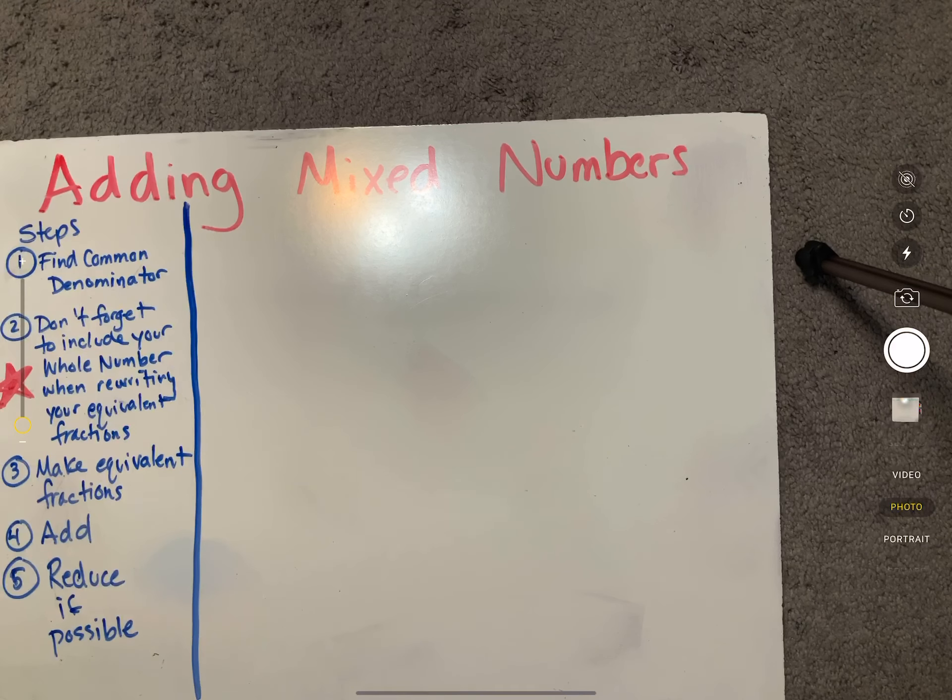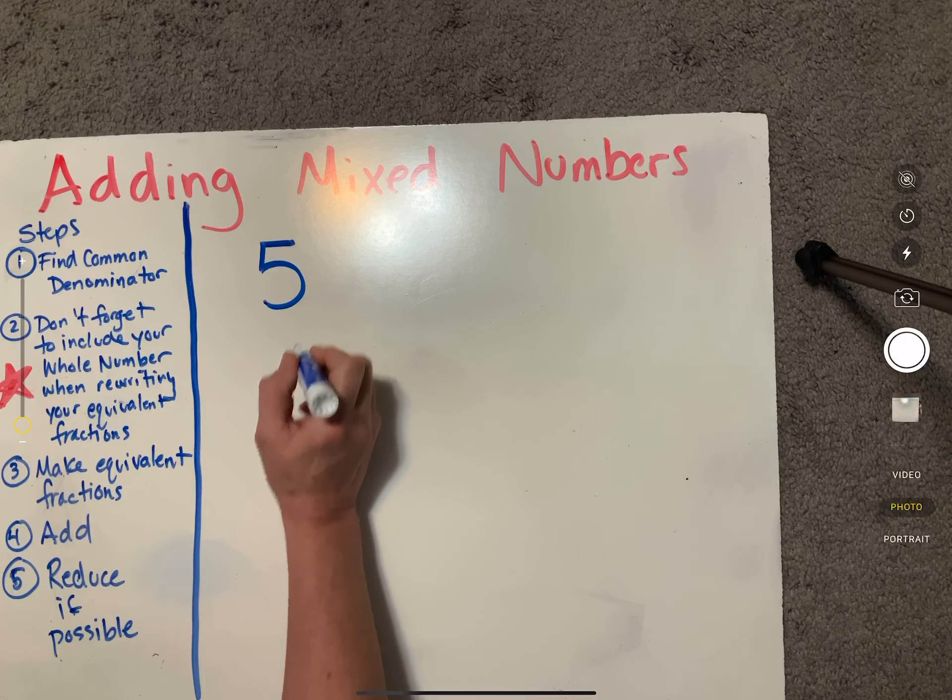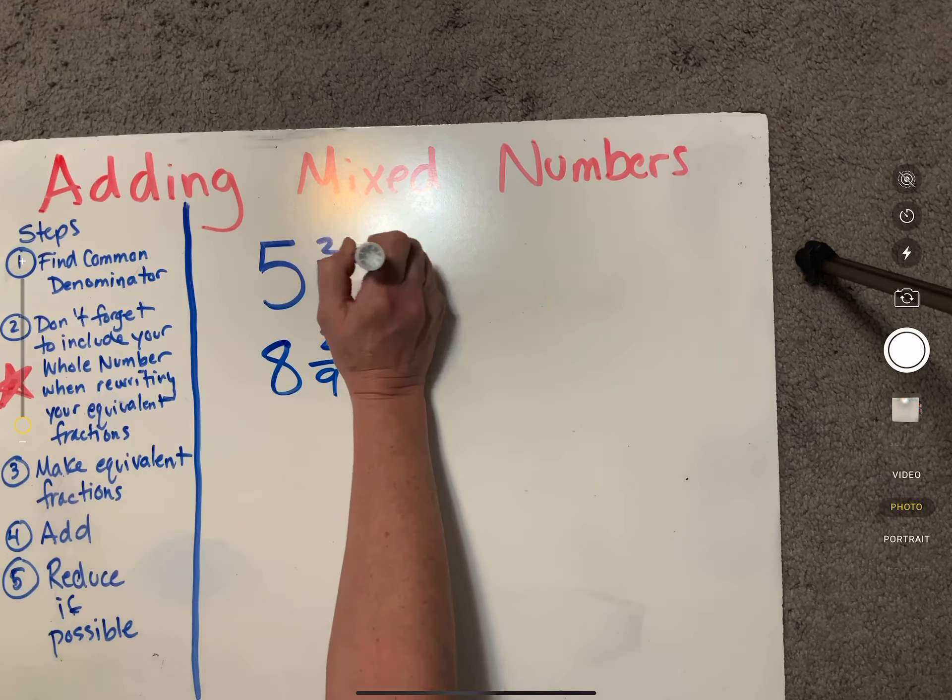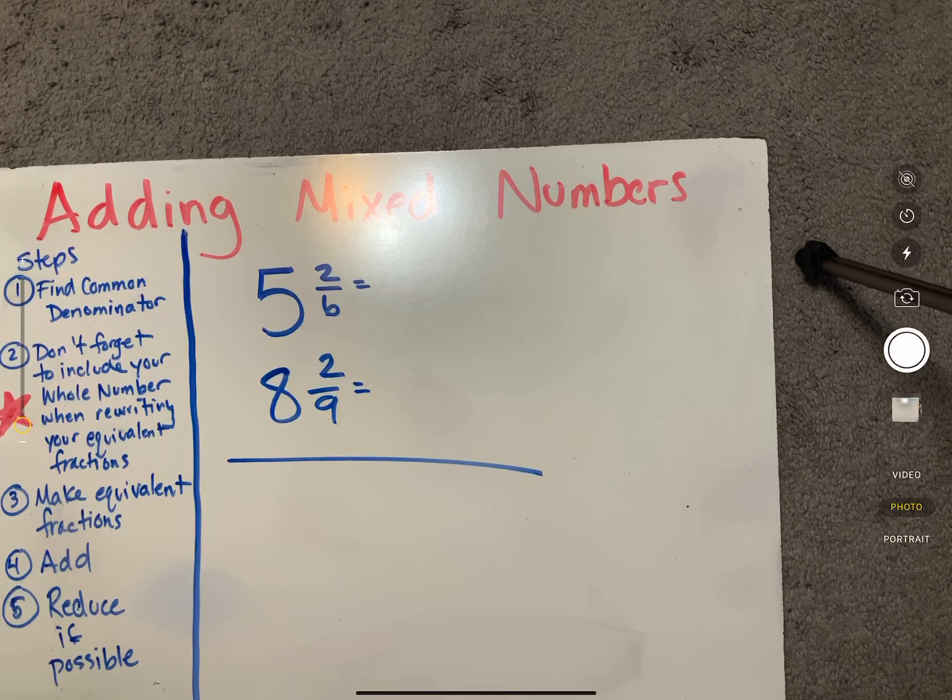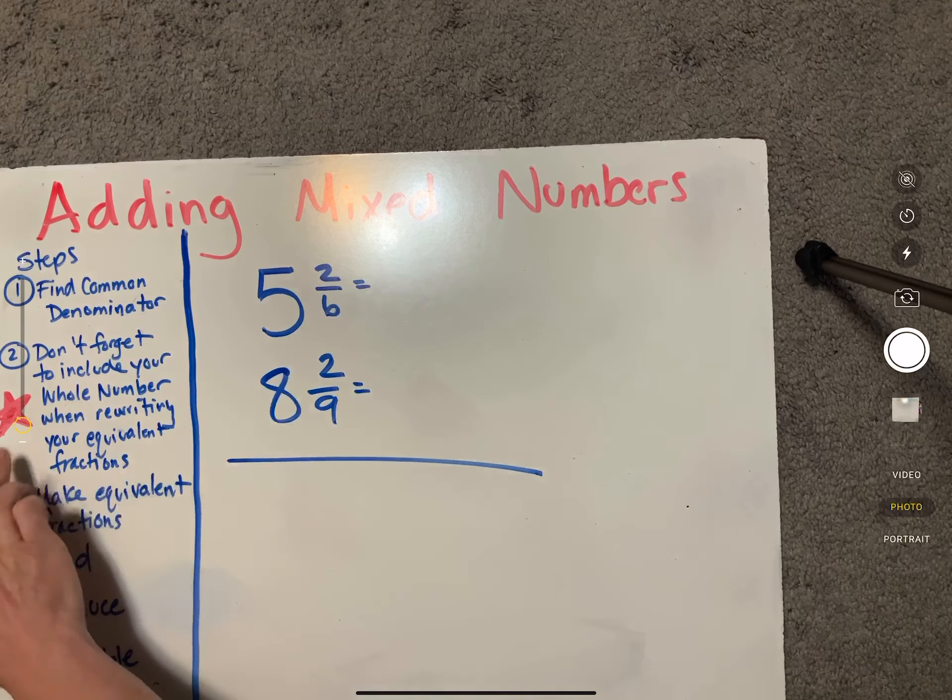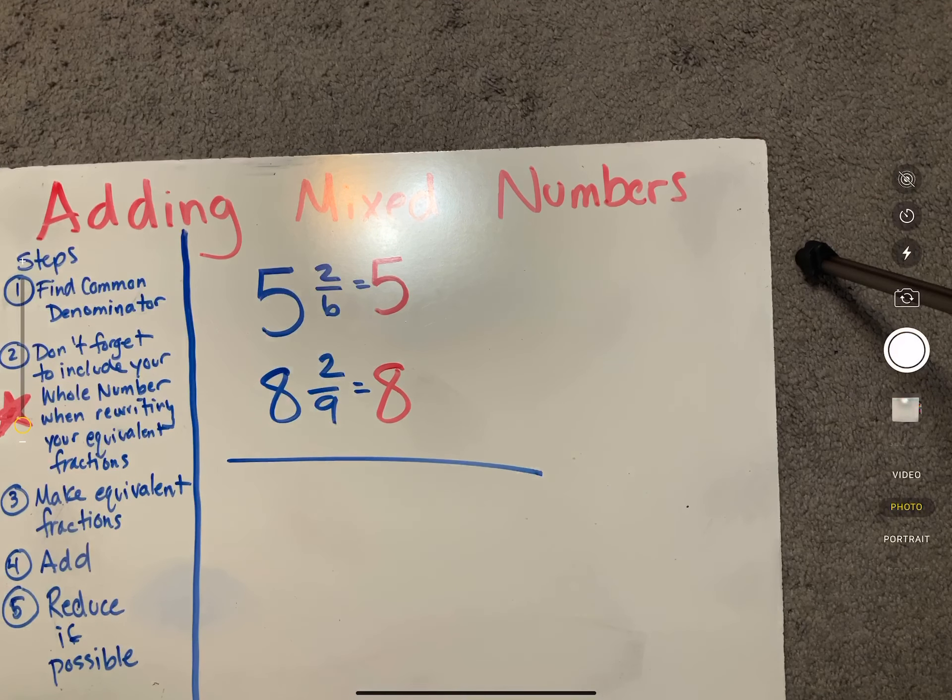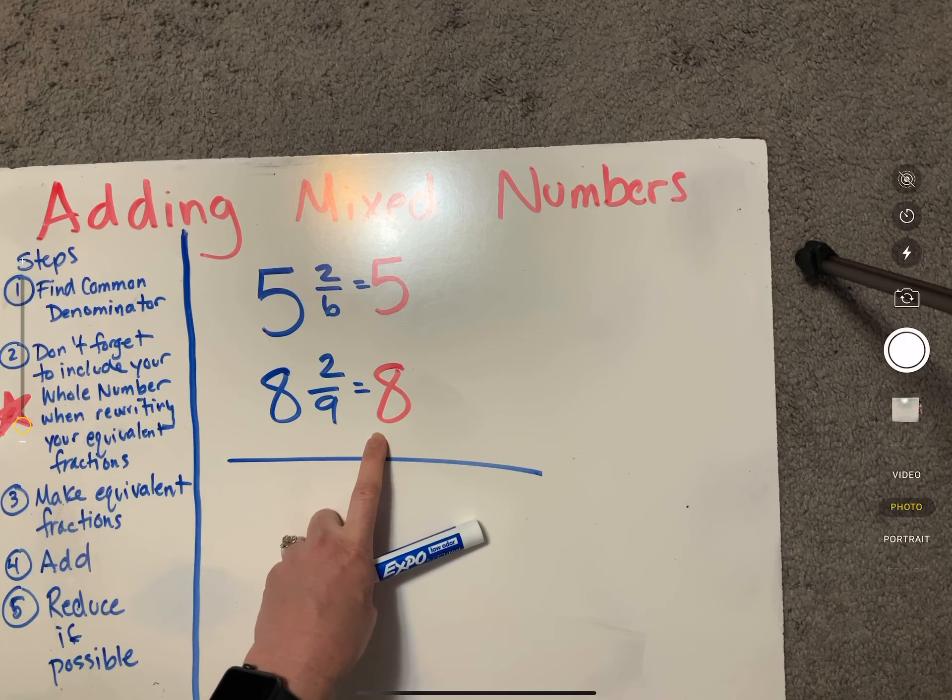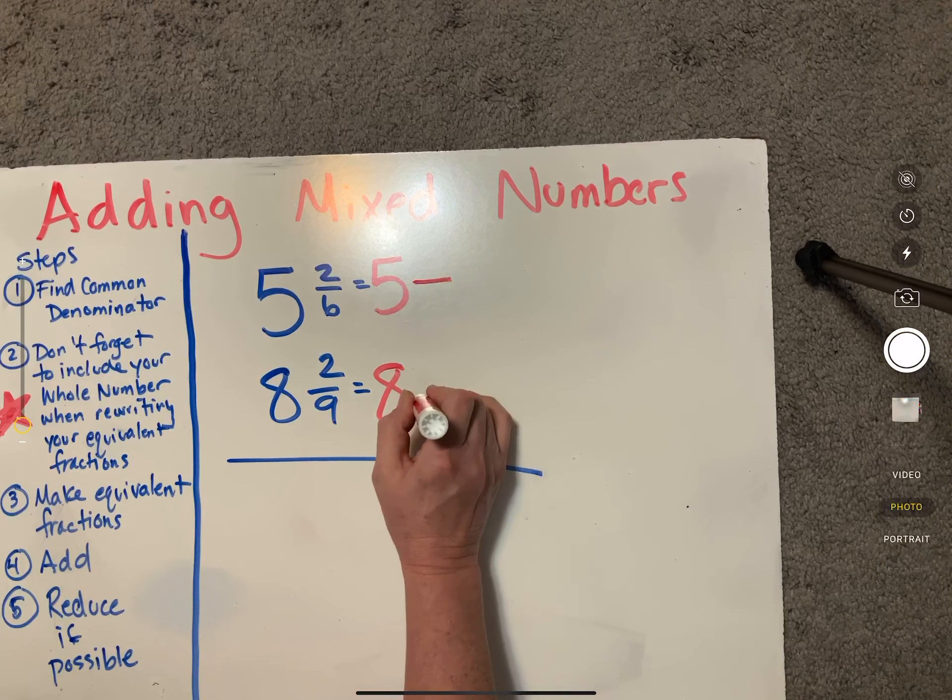Let's say that we have five and two sixths plus eight and two ninths. My first step is to make my equivalent fractions like I usually do. But looking at this starred step, I really want you to focus on remembering to transfer these whole numbers over here. I've had students in the past say oh it's fine I'll still remember them. No, I really want you to rewrite them here. Don't try to put everything in your head. This is part of showing your work.